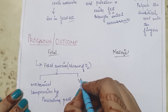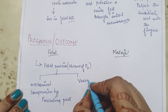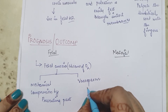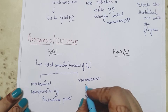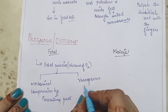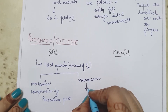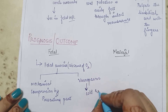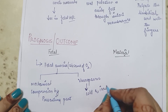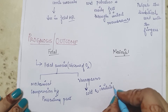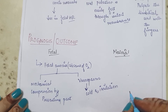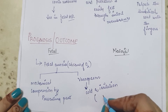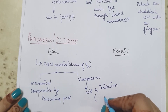The second cause is vasospasm, meaning constriction of blood vessels. Blood vessels constrict because of cold and irritation that occurs when the umbilical cord is exposed from the vulva.